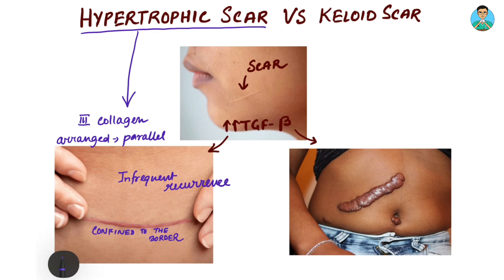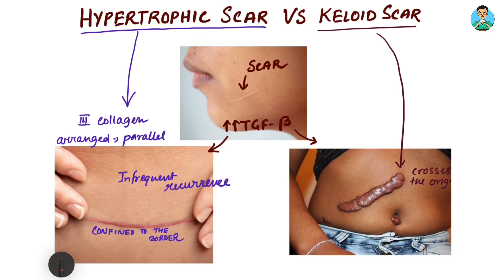On the other hand, you have something known as a keloid scar. As you can see over here, the keloid scar crosses the original wound boundary. It is mainly comprised of collagen type 1 as well as type 3 collagen.